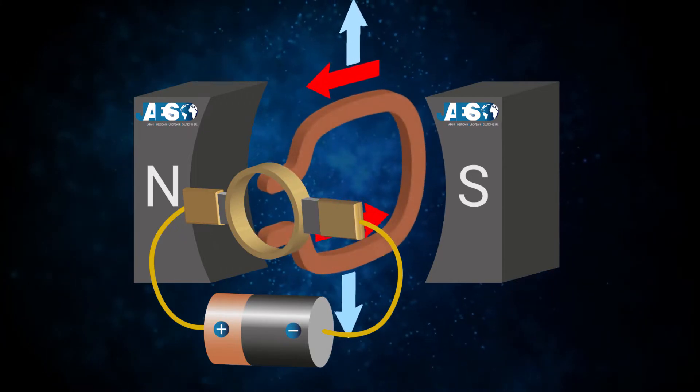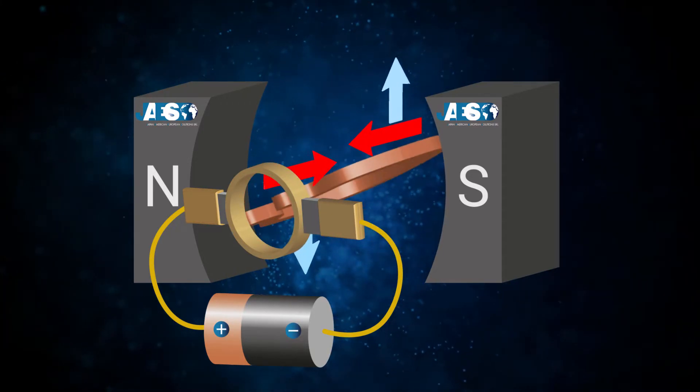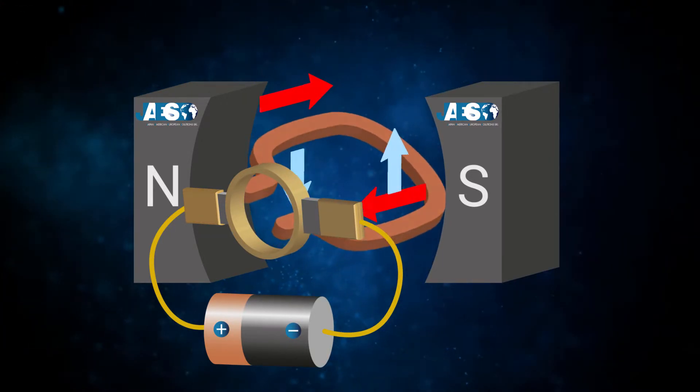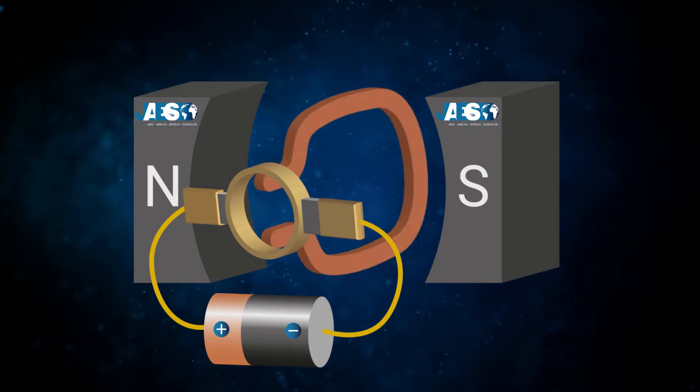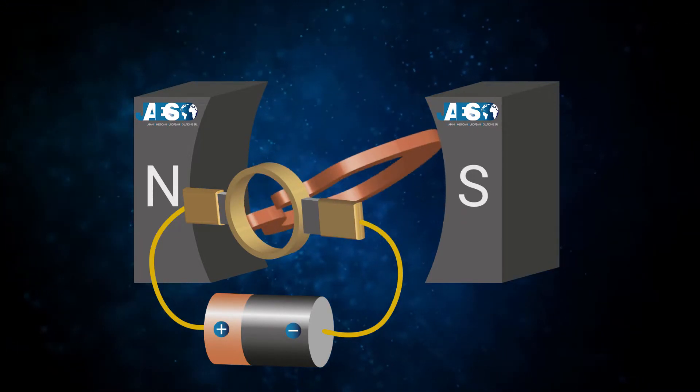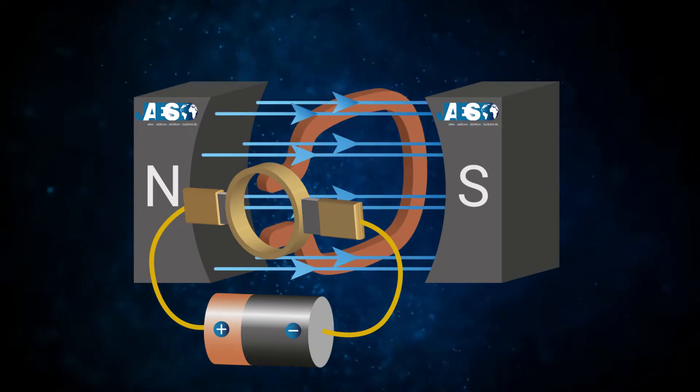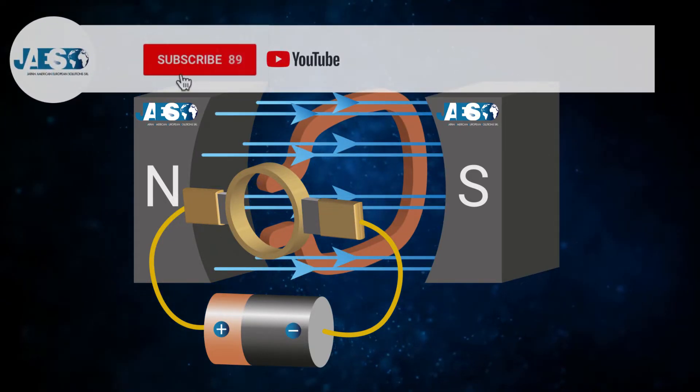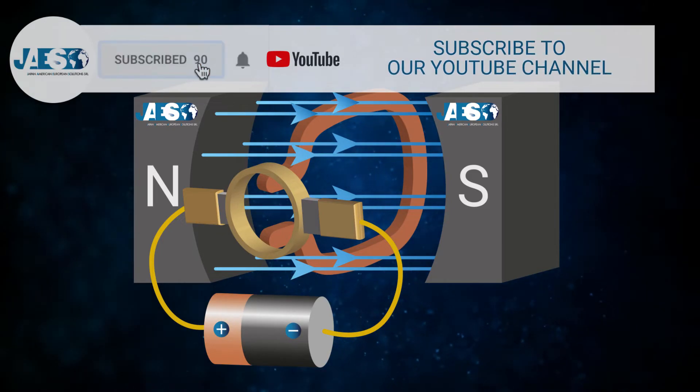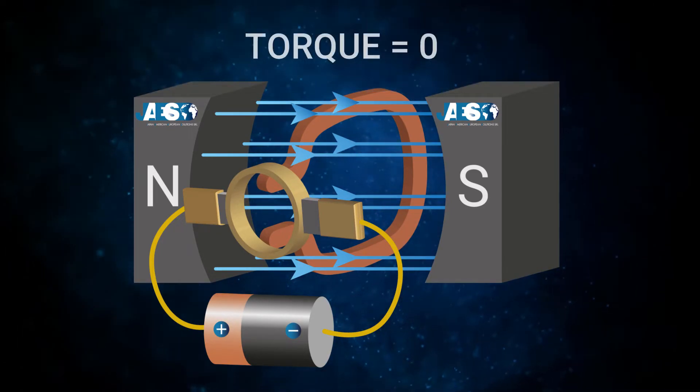But in this situation, the torque action is not the same during the whole rotation of the coil. In fact, we can notice a slowdown when the coil is nearly perpendicular to the magnetic field flux. That's because in this position, the value of the torque action is near zero.